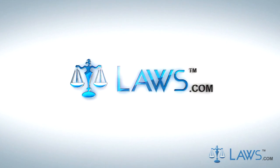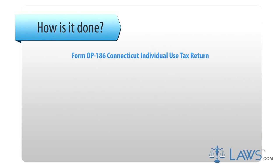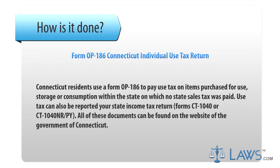Laws.com Legal Forms Guide. Form OP-186, Connecticut Individual Use Tax Return: Connecticut residents use Form OP-186 to pay use tax on items purchased for use, storage, or consumption within the state on which no state sales tax was paid. Use tax can also be reported on your state income tax return, Form CT-1040 or CT-1040NR/PY. All of these documents can be found on the website of the Government of Connecticut.